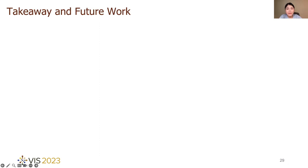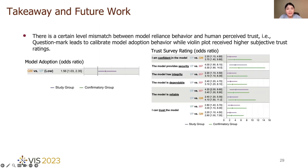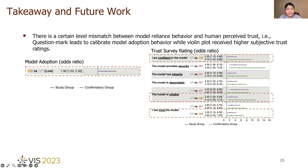Except the key findings I just presented, here are some takeaways of our study. There is a certain level mismatch between model reliance behavior and human perceived trust. Question mark leads to calibrate model adoption behavior, while violin plots received higher subjective trust ratings. It may be due to humans can be overwhelmed by complex visual information. They may have difficulties in correctly interpreting a visualization.